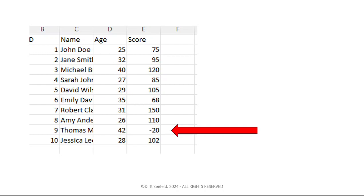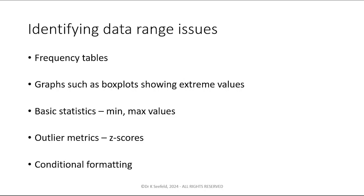How to identify issues with the range of the data: frequency tables are great for that. A box plot is a great way to show extreme values — you can see a dot that's way outside the range. Your basic statistics, just looking at min and max values. Outlier metrics: if you know the z-score method, when you have a z-score greater than 2, plus or minus — particularly plus or minus 3 — it's considered an outlier. To look at z-scores, you standardize your data with z = (x − μ) / σ. Another quick way to identify data range issues is with conditional formatting. For example, if you have a column with age, do a conditional format to highlight anything below 0 or above 100.